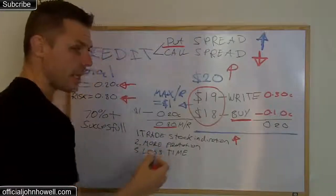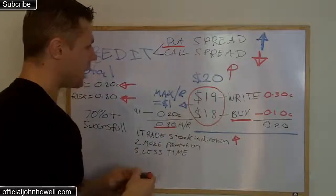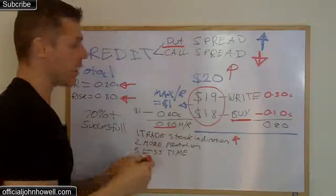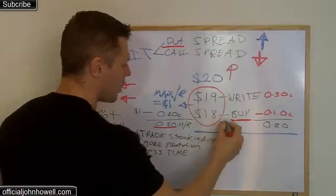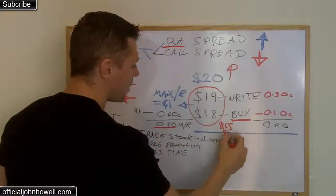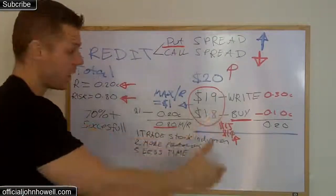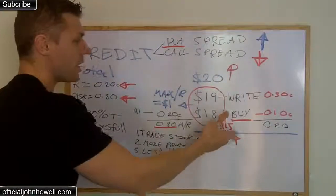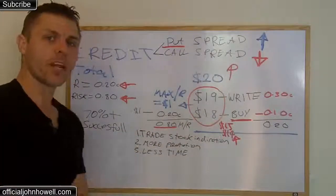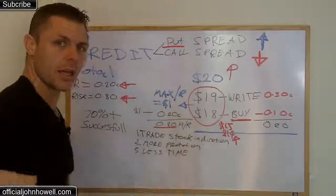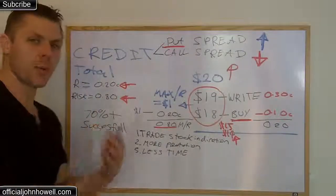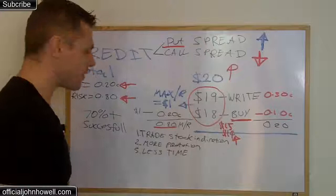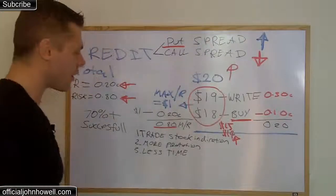The second thing is more protection. If the stock is at $20, try to find trades where you can write as far down as the $15 option and buy the $14 option. That means the stock has to fall all the way from $20 down to $15 before you're in any real danger. Writing that deep below the current price increases the probability of a successful trade. There are trades out there that meet this criteria.